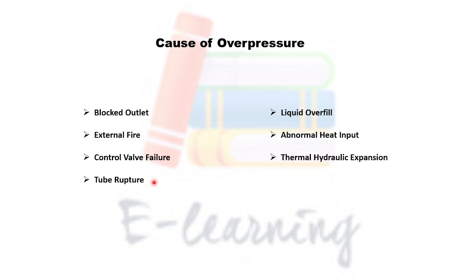When a process engineer is going to design or size a pressure safety valve, he must first analyze what could cause an increase in pressure. There are different scenarios that can happen during a process that can result in overpressure. For example, if the outlet is blocked for some reason, the pressure would increase in the vessel or pipe.